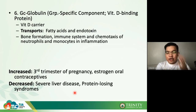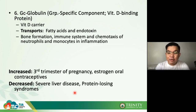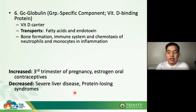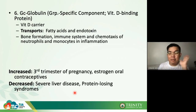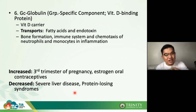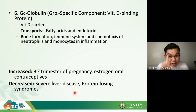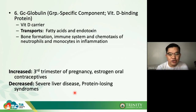That covers the first half of our major plasma proteins. Before we continue, we will be taking a five-minute break. We have covered proteins classified by function, conjugated protein types, and the alpha-1 globulin proteins in detail.